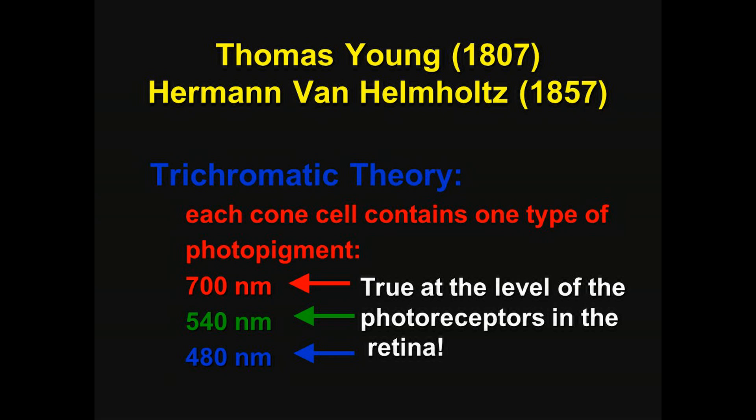who were arguing for trichromatic theory as an explanation of human color vision. Tri means three, chroma means color, so trichromatic theory is based on the idea that there are three primary colors and that each of the cone cells contained a single type of photopigment optimally sensitive to either long wavelength light (red), medium wavelength light (green), or short wavelength light (blue).